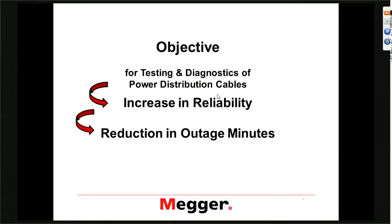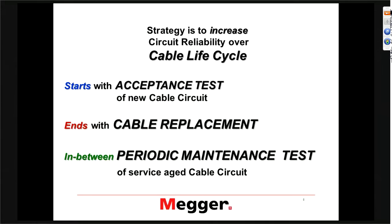What is the objective of testing and diagnostics of power distribution cable? We want to increase the reliability, and as a consequence, also have a reduction in outage minutes. This is pretty much a driving factor in today's business environment in the utility industry. The strategy to increase circuit reliability over the cable life starts with the acceptance test of a new circuit, ends with the cable replacement, and in between we have the periodic maintenance test of service-age cable circuits.